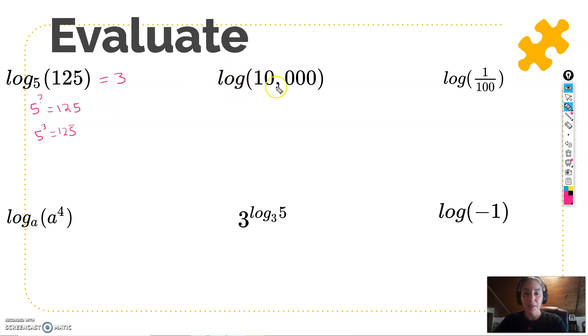The next one: how do I do log of 10,000? Remember, log without the base is really log base 10. So this is asking the question: 10 to what power is equal to 10,000? Let's see, well I happen to know the answer here is 4. 10 to the 4th power is 10,000, so log of 10,000 is equal to 4.